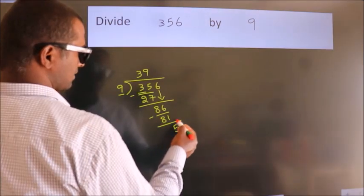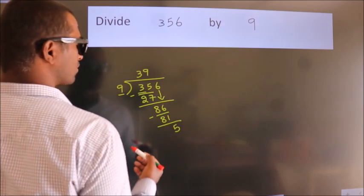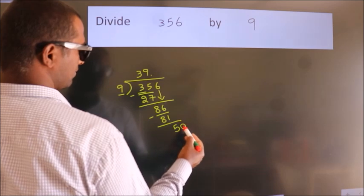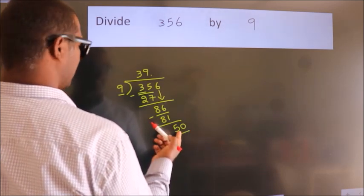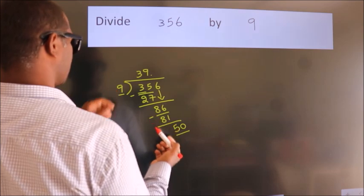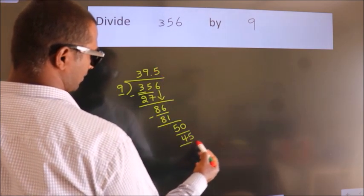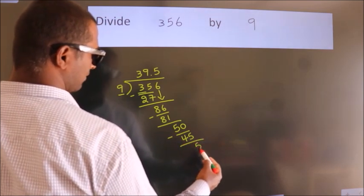After this, no more numbers to bring it down. So what we do is, we put a dot and take 0. So 50. A number close to 50 in the 9 table is 9 fives, 45. Now we subtract. We get 5.